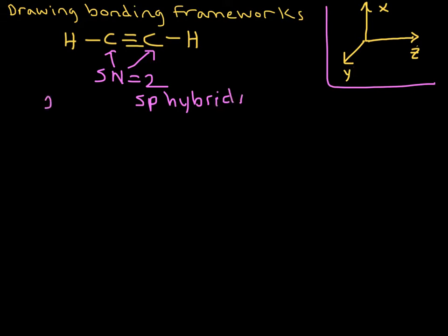We mixed the 2s and one of the 2ps. Let's look at our coordinate system and decide which one we actually used. Think about this molecule, think about the shape. It's a linear molecule. The steric number is 2 at both those carbons, so that's a linear shape. And the molecule is lying along the z-axis. So we used the 2pz in hybridization. So that means that 2px and 2py remain.